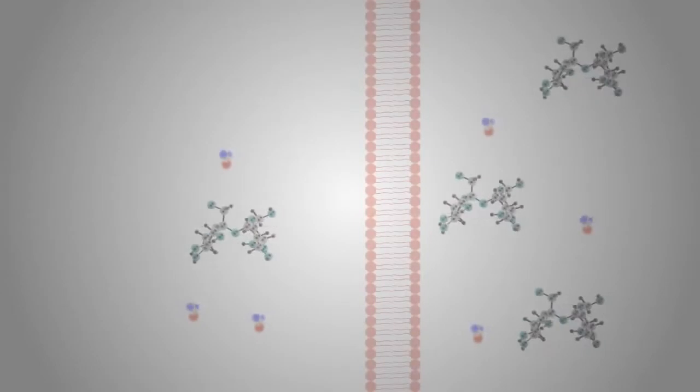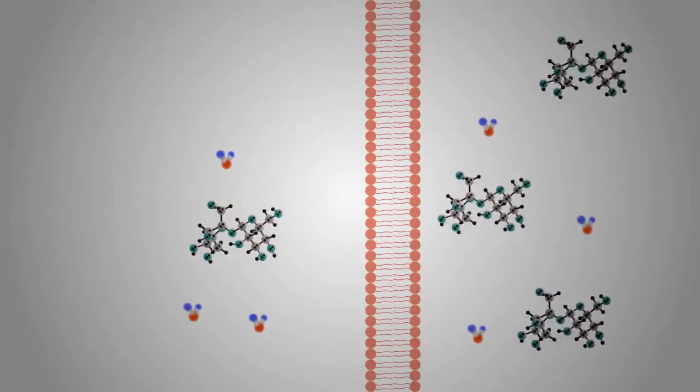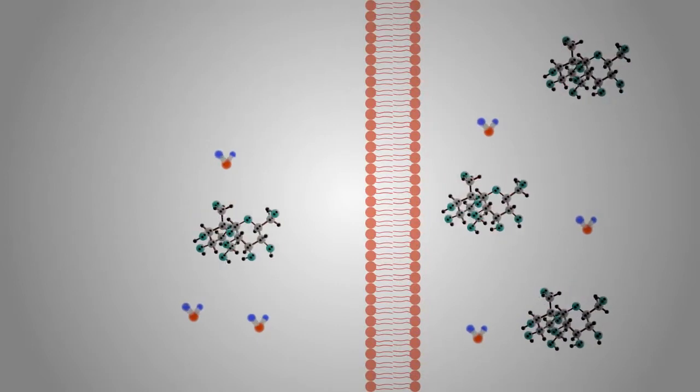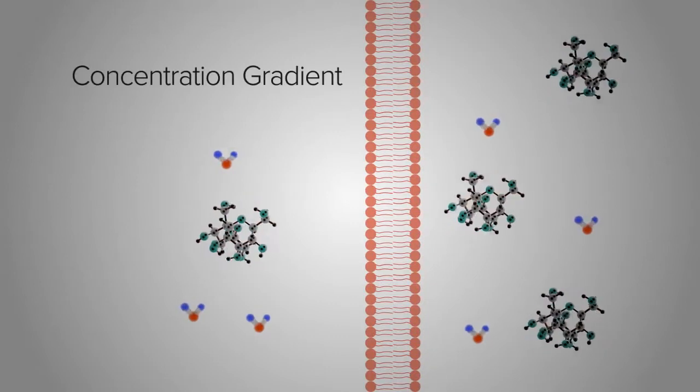The amount of solute, in our case sugar, on either side of a membrane will decide how water moves across a membrane. The difference in the amount of a type of molecule across a membrane is called a concentration gradient.